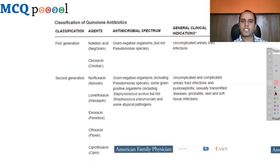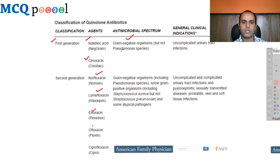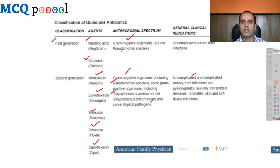Classification by antimicrobial spectrum: First-generation agents — nalidixic acid and cynoxacin — are active against gram-negative organisms but not Pseudomonas, used for uncomplicated urinary infections. Second generation — norfloxacin, lomefloxacin, enoxacin, ofloxacin, ciprofloxacin — has expanded activity against gram-negatives including Pseudomonas, some activity against gram-positives including Staph aureus but not Strep pneumoniae, and some atypical pathogens. Used for uncomplicated and complicated UTIs, pyelonephritis, STDs, prostatitis, skin and soft tissue infections.